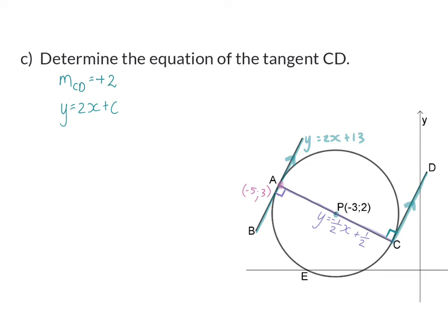We do however know that APC is the diameter and that means that P is the midpoint between A and C. So here you can choose to use your midpoint formula to calculate the coordinates of C or you can use the translation from A to P and repeat it from P to C.